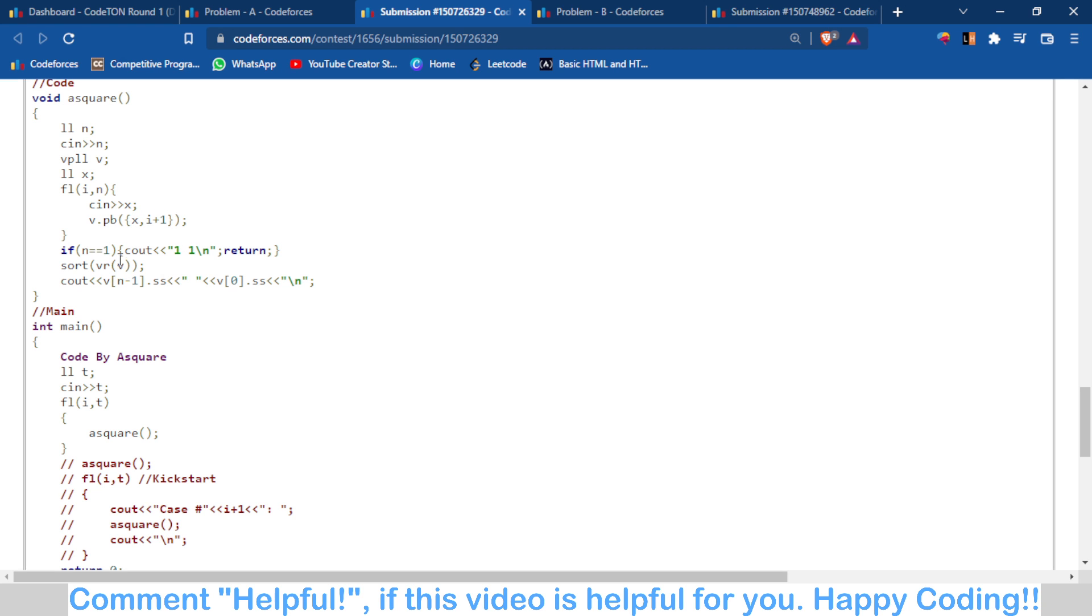What I have done is I have first of all taken the values in a vector pair so I can also store the index. After sorting, we have the index at the second element of the vector pair. Now I have just outputted the index of the largest element and the index of the smallest element. And if n is equal to 1, then there is only one element present, so we can simply write 1.